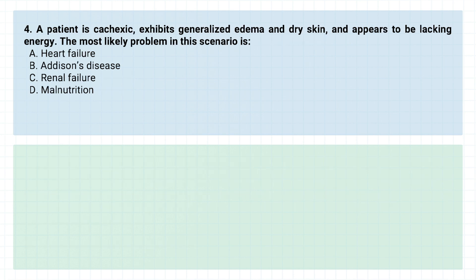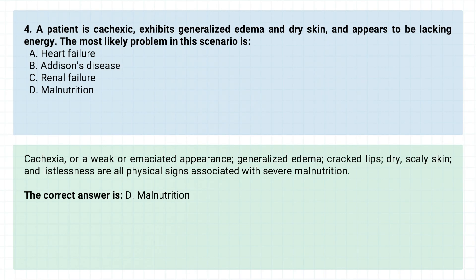Question number four. A patient is cachexic, exhibits generalized edema and dry skin, and appears to be lacking energy. The most likely problem in this scenario is: A. Heart failure. B. Addison's disease. C. Renal failure. D. Malnutrition. The correct answer is D. Malnutrition.